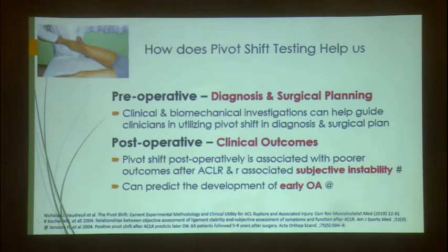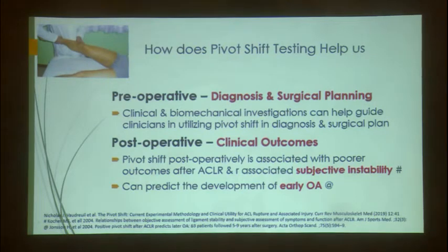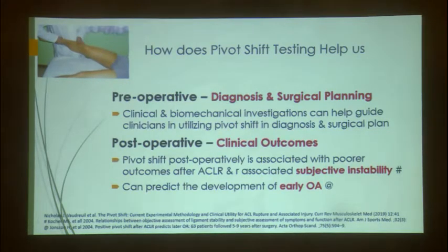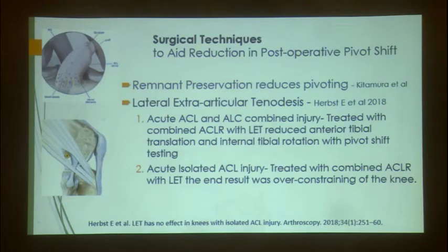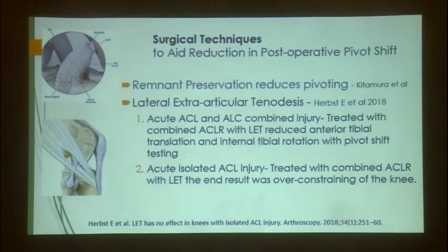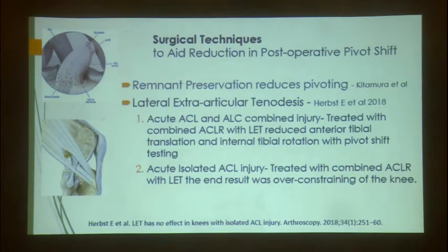The pivot shift test guides preoperative diagnosis and surgical planning. A grade 2 or 3 pivot shift indicates that the anterolateral corner also needs to be addressed, not just the ACL. Postoperatively, a positive pivot shift after ACL reconstruction predicts poorer subjective outcomes and progression to osteoarthritis if neglected. Techniques that reduce pivot shift include addressing associated injuries — meniscus, ramp lesion, root — and remnant preservation, which recent papers show can reduce pivoting to some extent.